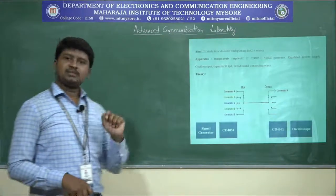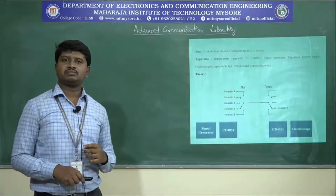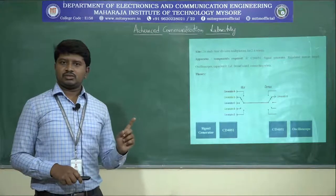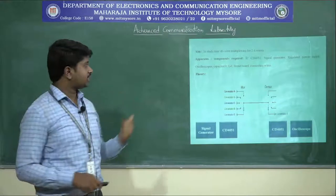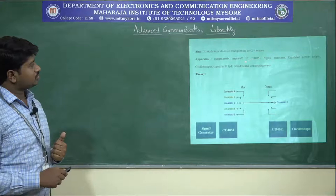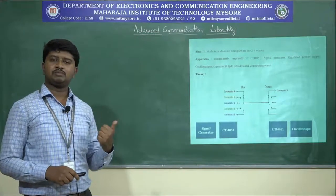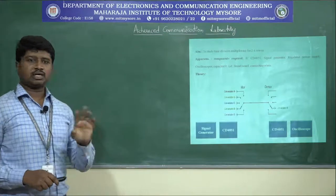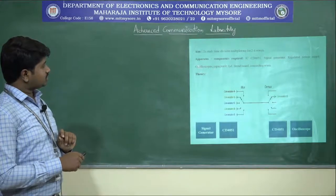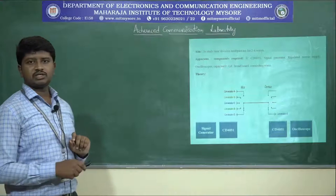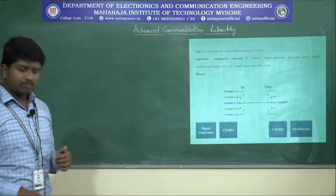The first experiment we are going to study in this lab is TDM — time division multiplexing using two or three waves generated by signal generators. We generate sinusoidal signals, put them into the modulator block, modulate them, and then observe the demodulated waves. The apparatus required includes the CD4051 Texas Instruments IC — a 16-pin IC with 7 input/output pins — along with signal generators, regulated power supplies, oscilloscopes, 0.1 microfarad capacitors, a breadboard, and connecting wires.